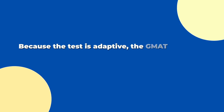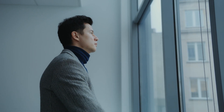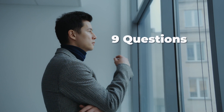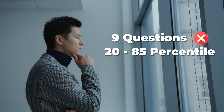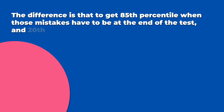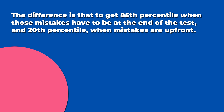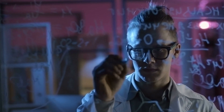Because the test is adaptive, the GMAT score is not based on the number of mistakes. For example, you can get nine questions wrong on the quant section, and your score range will be between the 20th and 85th percentile. That's a huge range with the same number of mistakes. The difference is that to get the 85th percentile, those mistakes have to be at the end of the test, and 20th percentile when mistakes are up front. These are extreme scenarios, but they illustrate the point really well.